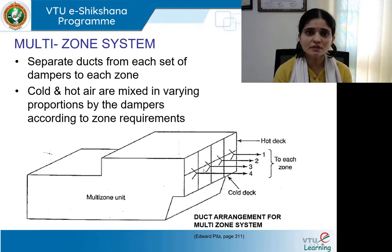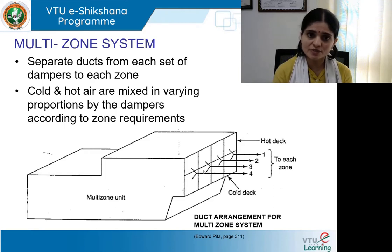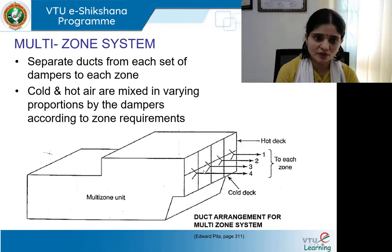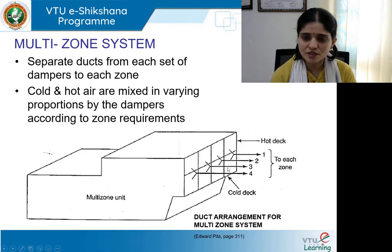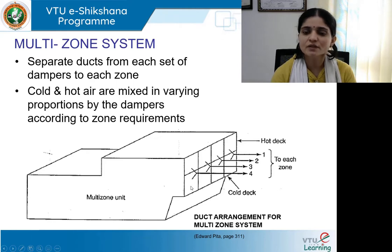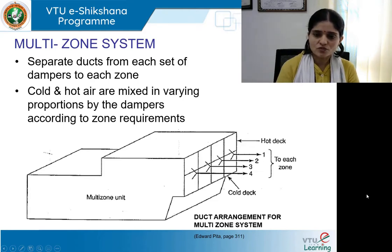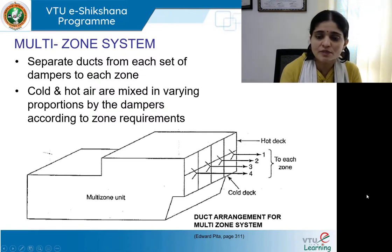Cold and hot air are mixed in varying proportions by the dampers according to zone requirements — the proportion can be calibrated as per zone demand. Ducts branch out from the hot deck on top and cold deck on the bottom. A duct branches from the hot deck and another from the cold deck; they then move to the individual zone. The damper at the interface controls the airflow merging into each zone.